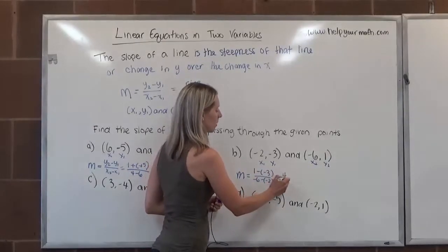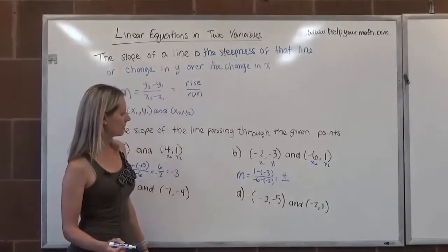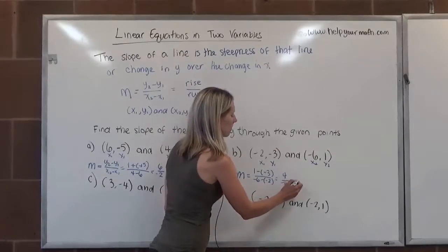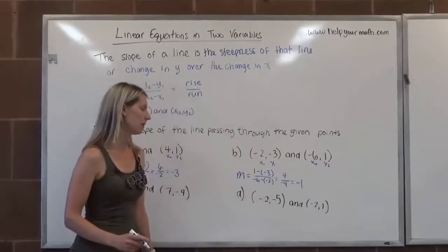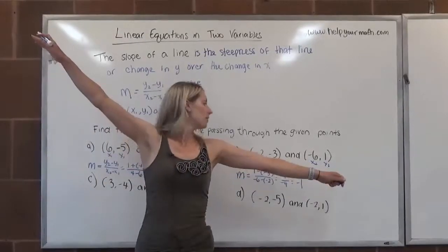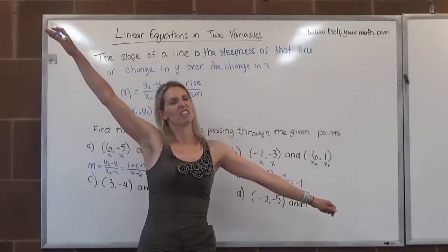In the numerator, 1 plus 3 is 4. In the denominator, negative 6 plus 2 is negative 4. 4 divided by negative 4 is negative 1. What this tells me about the graph is that it's going down from left to right. The slope is negative 1, so it's probably about this angle.